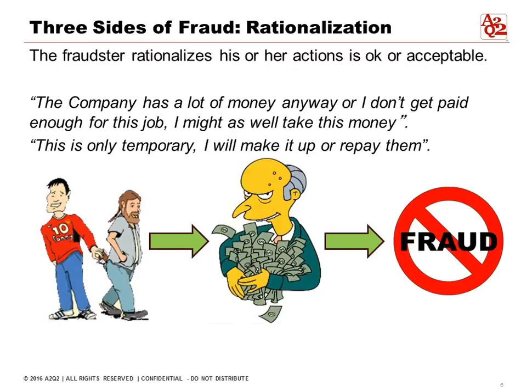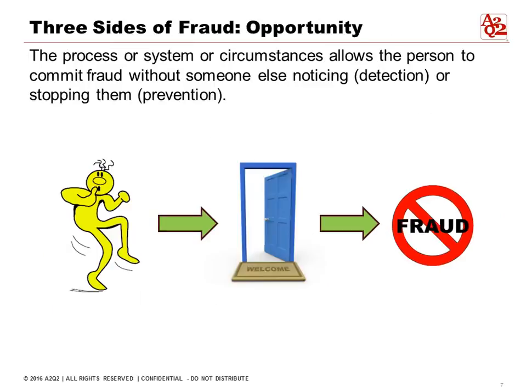The second part of the fraud triangle is rationalization — the fraudster rationalizes that their actions are okay or acceptable. It often starts with thoughts like 'the company has a lot of money anyway,' or 'I don't get paid enough for this job,' or 'this is only temporary, I'll repay them.' It starts small.